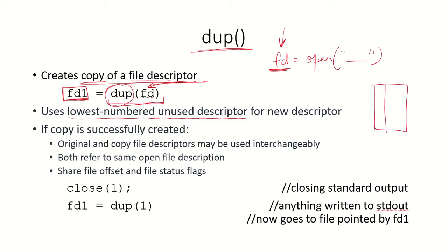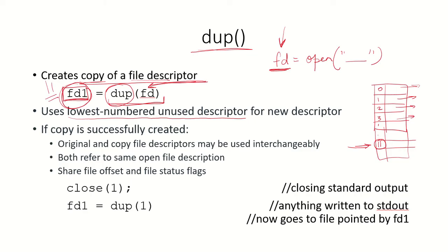In the file descriptor table, suppose all the integers up to 10 are already pointing to certain files or resources, and the least unused one is 11. So if 11 is the least numbered unused descriptor, then FD1 will be given the value 11. If FD had a value of 7, then 7 and 11 can be used interchangeably — they both point to the same open file or resource. Both will share the same file offset and file status flags.